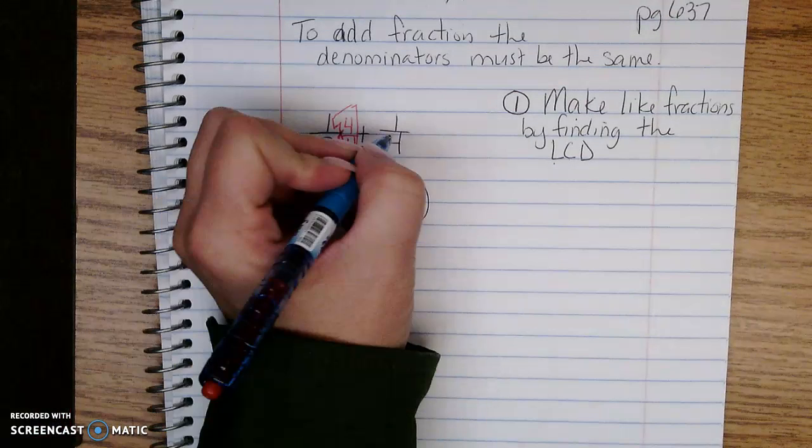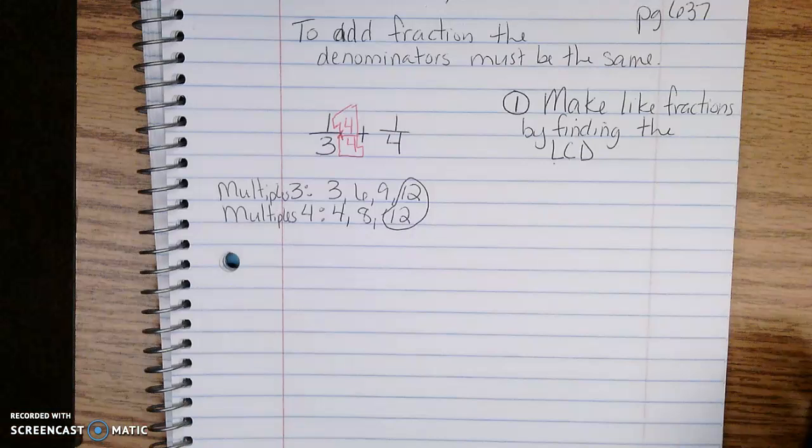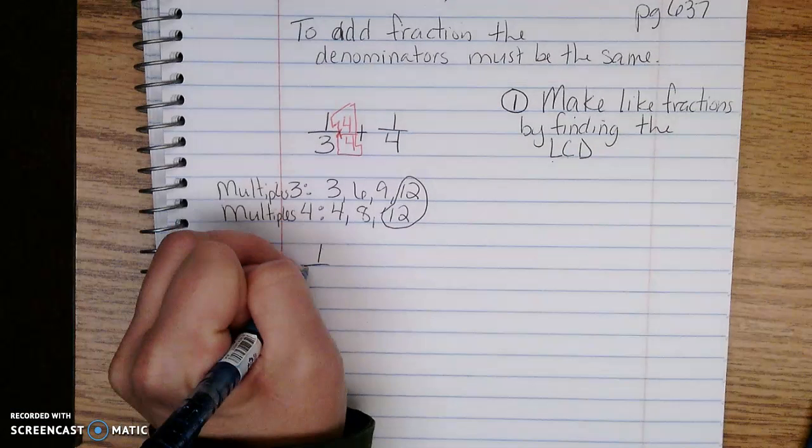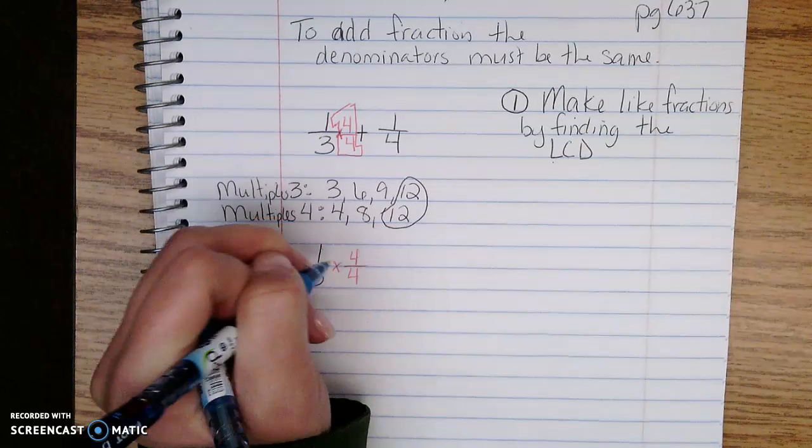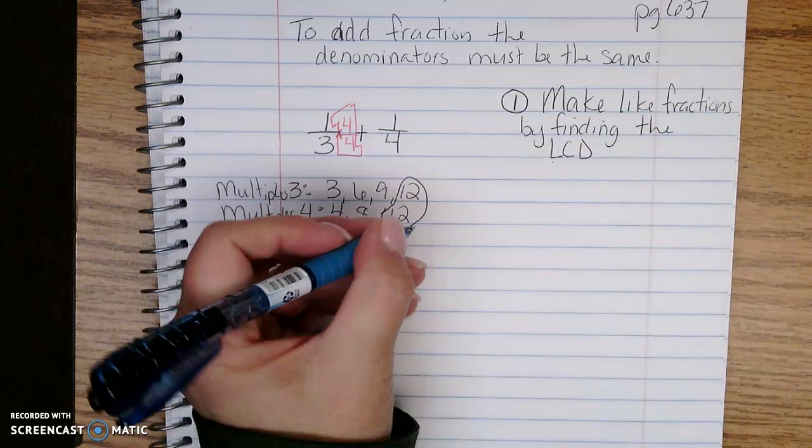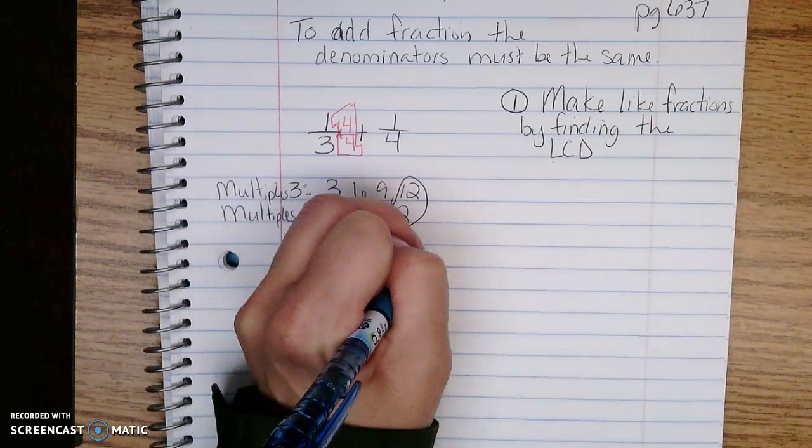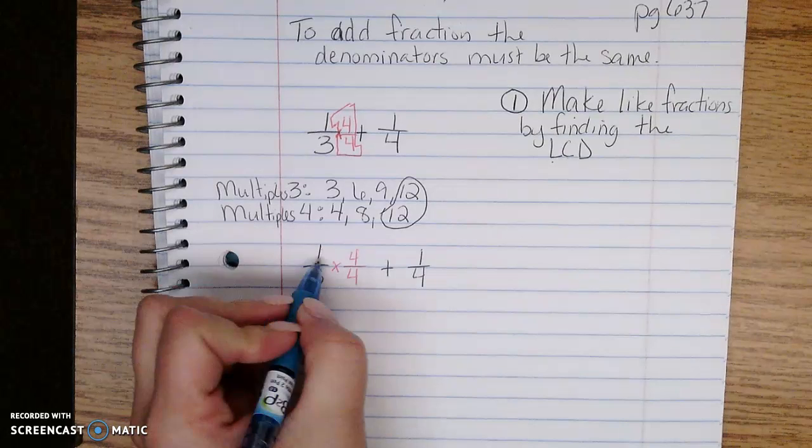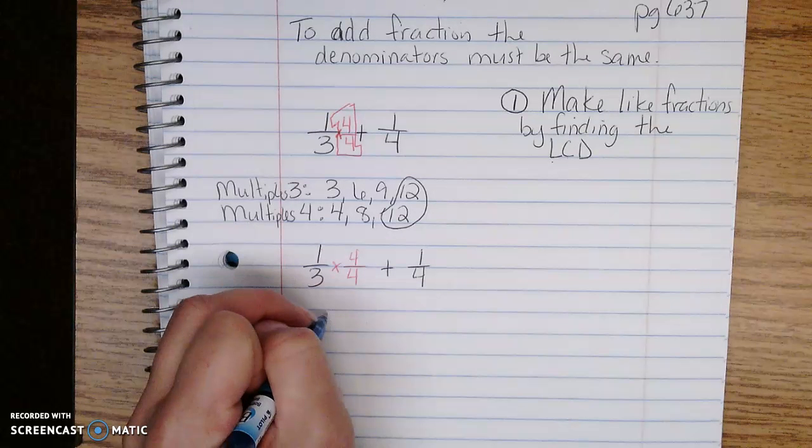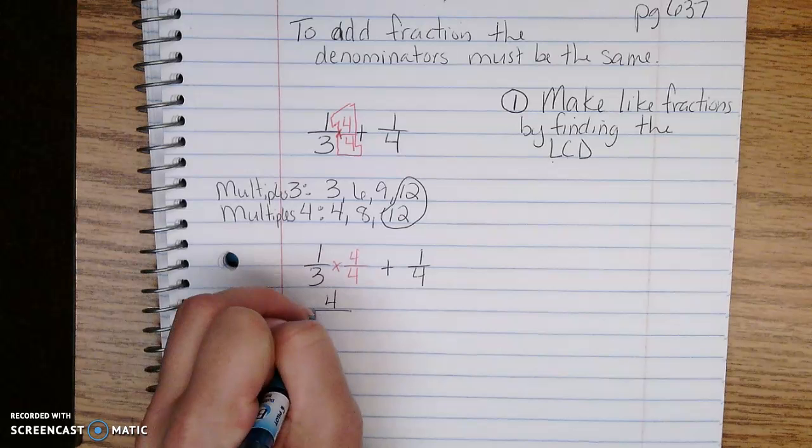I'm going to rewrite this. I'm going to do 1/3 times my value of 1, which is 4/4, plus I have my 1/4. So 1 times 4 is 4 and 3 times 4 is 12.